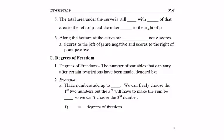So the total area under the curve is still one, with 50% of that area being to the left of mu, which is the center, and the other 50% to the right of mu. So 100% is just split into two parts.